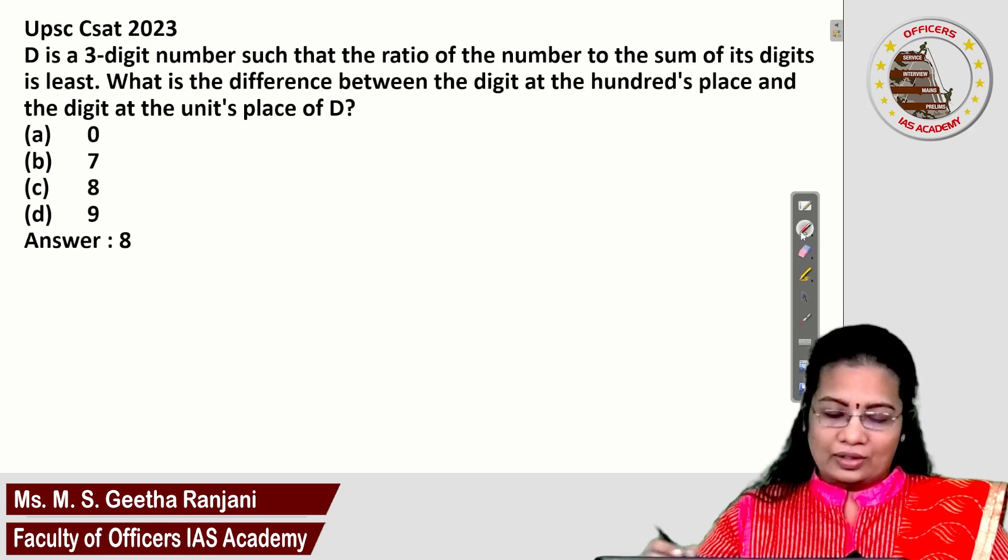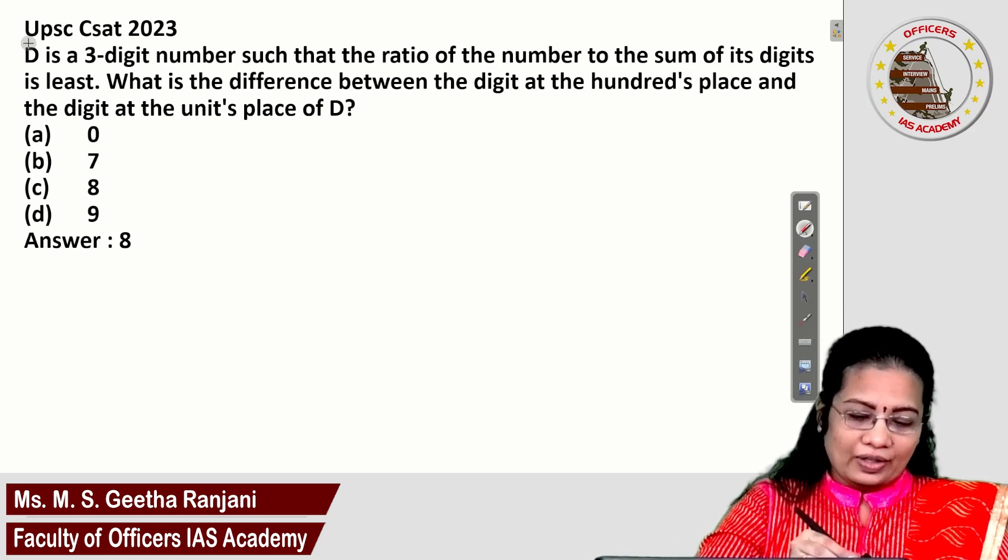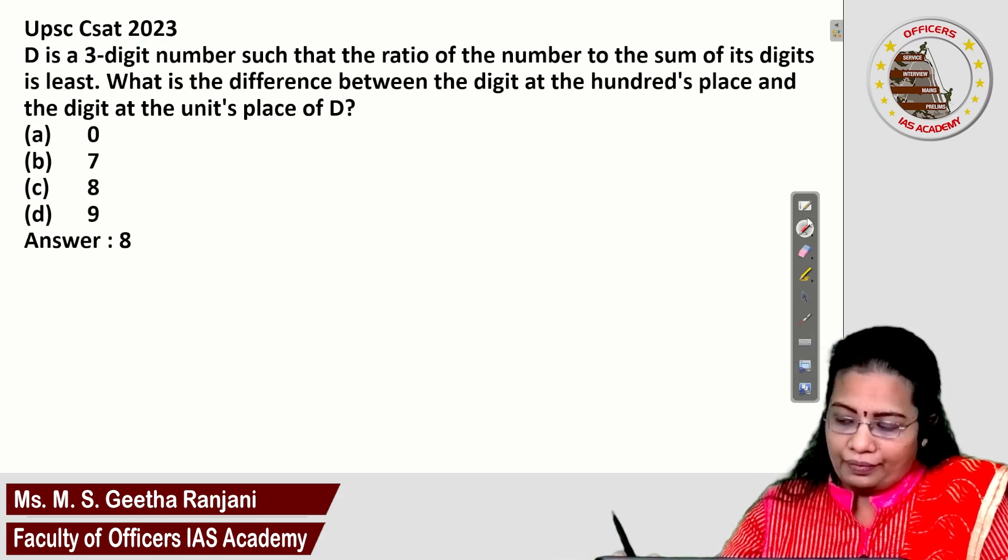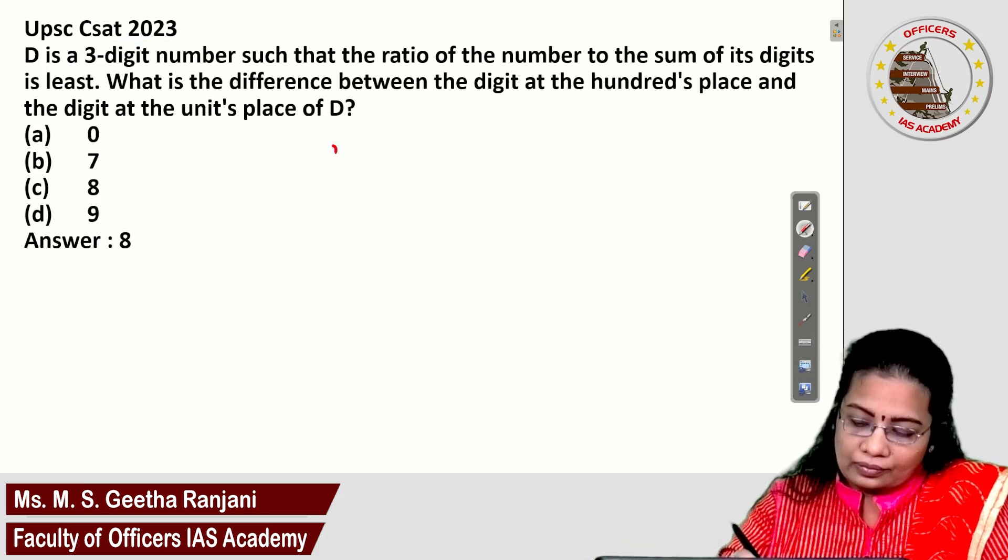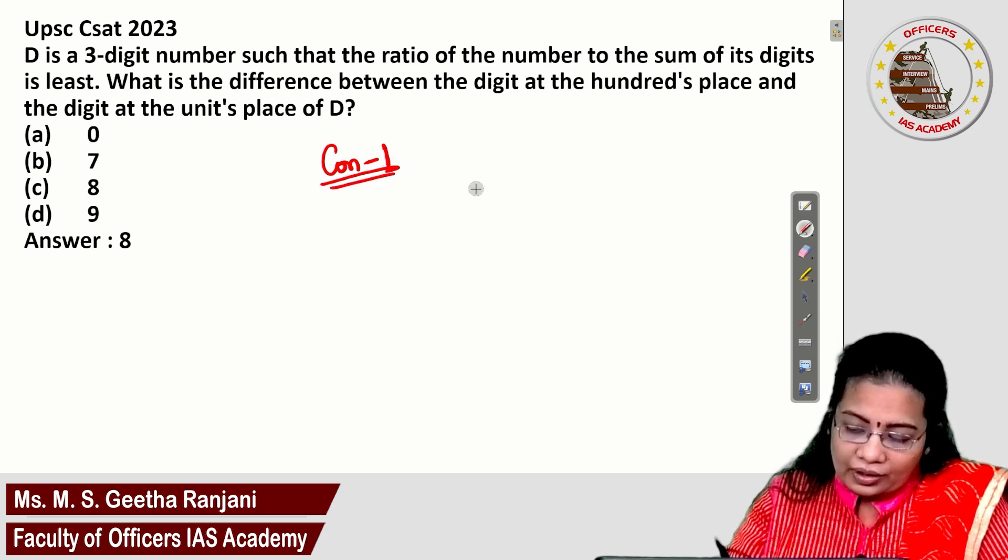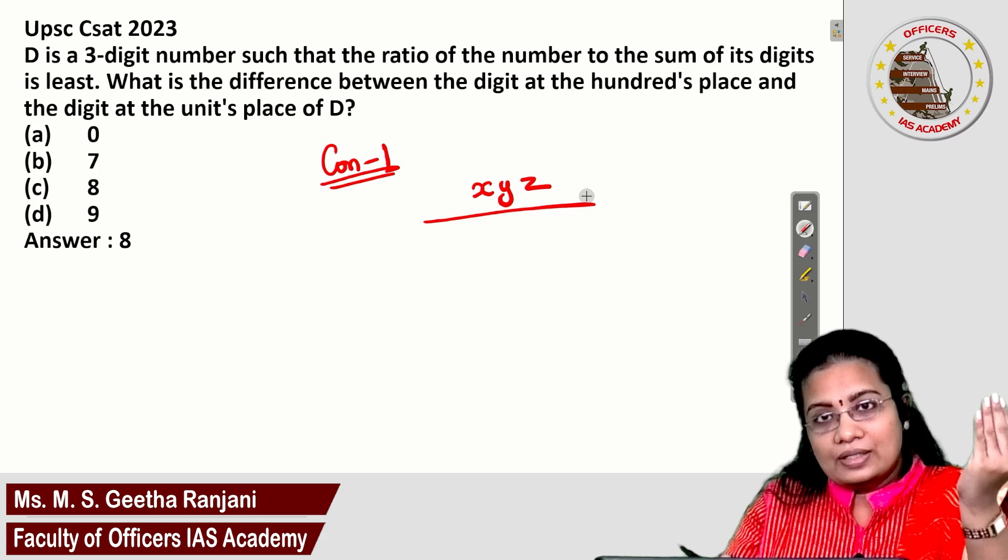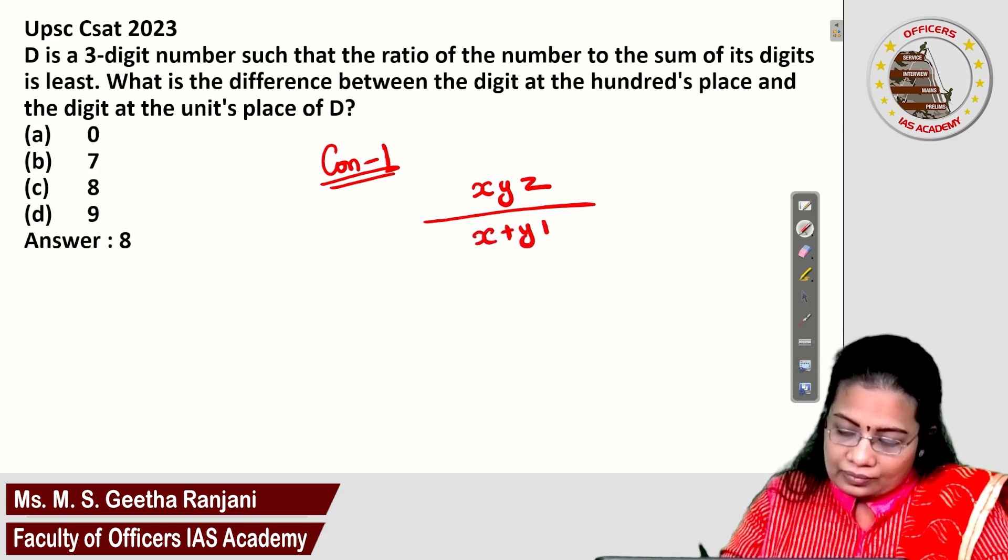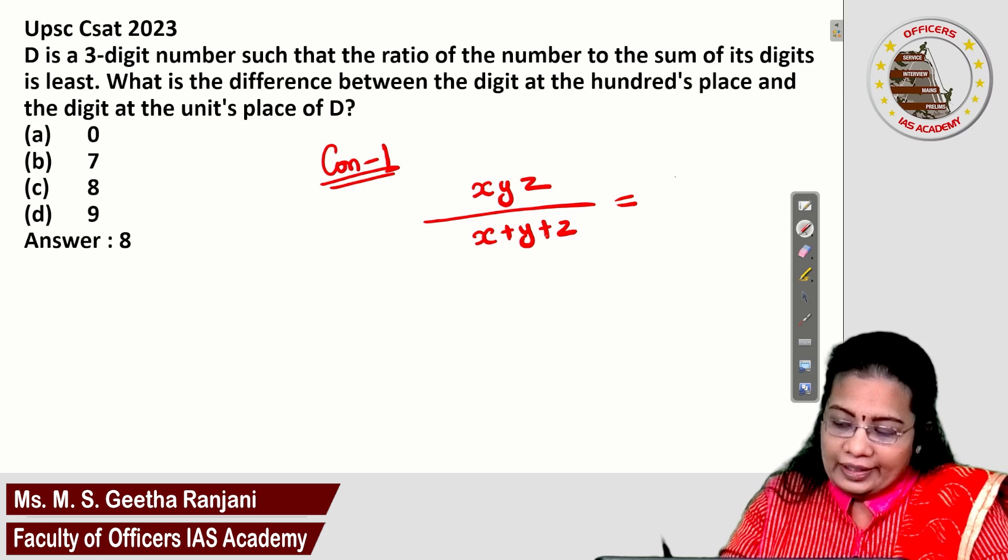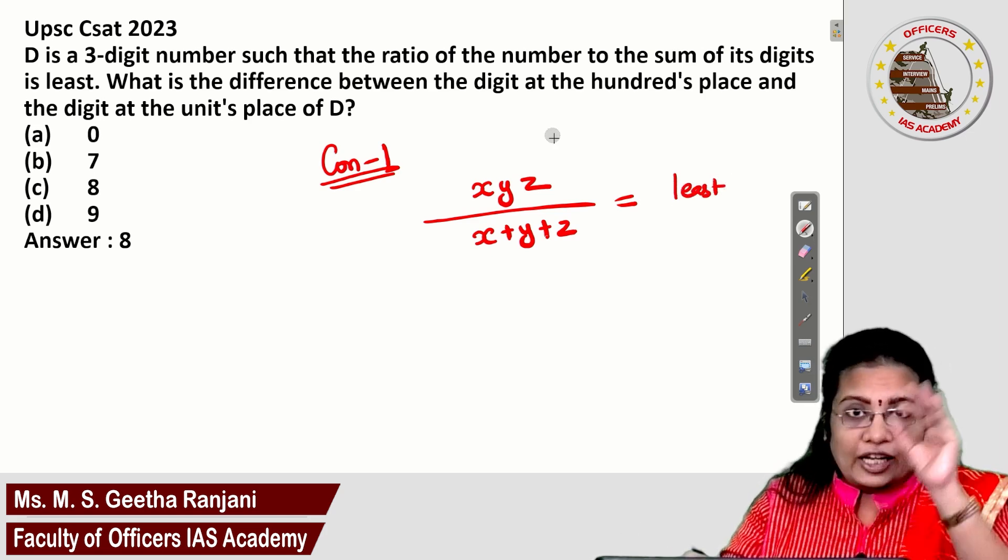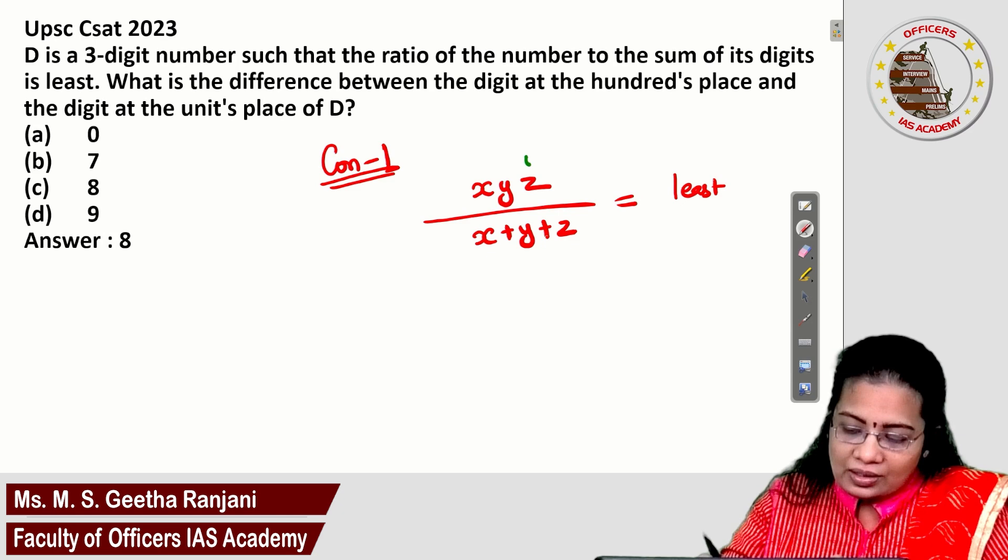Today's question was earlier given in UPSC CSAT 2023. You can note down concept number 1. When a 3-digit number is divided by its sum of the digits, you need to get the least number. Here 3 positions: units place, tens place, hundreds place.